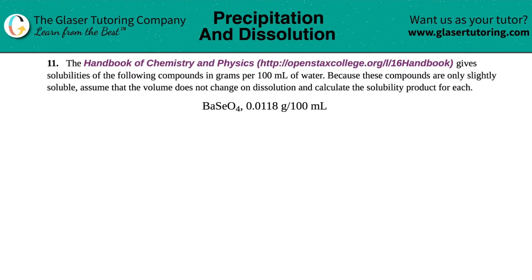Number 11, the handbook of chemistry and physics gives solubilities of the following compounds in grams per 100 mils of water. Because these compounds are only slightly soluble, assume that the volumes do not change on dissolution and calculate the solubility product for each.